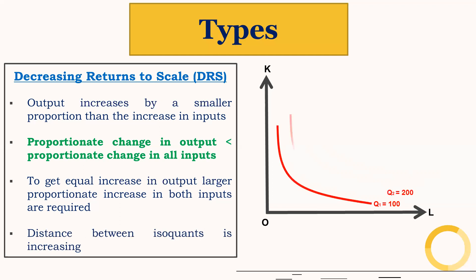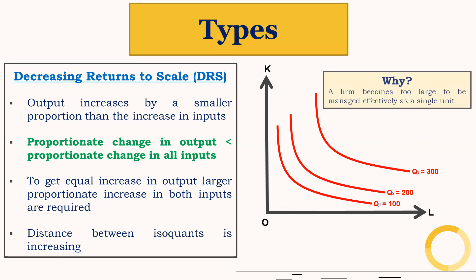Looking at the isoquants Q1, Q2, and Q3, the distance between Q2 and Q3 is higher than the distance between Q1 and Q2. So to get an equal increase in output — here 100 units — a larger proportionate increase in both inputs is required. Why do we have decreasing returns to scale? As the firm becomes too large, it is difficult for the firm to manage effectively as a single unit, and therefore we have decreasing returns to scale.